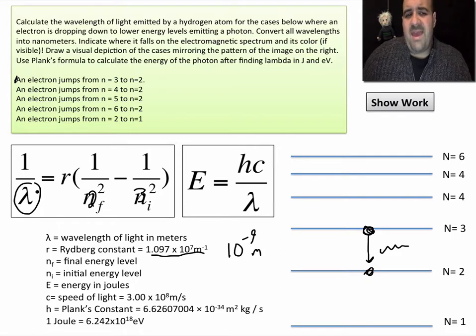You just kind of got to rearrange this algebraically to solve for lambda. Once you get lambda, once you know your lambda, to figure out the energy in joules, we're going to use this equation over here. Energy equals hc over lambda. h is the Planck constant. This is a constant, always the same number.